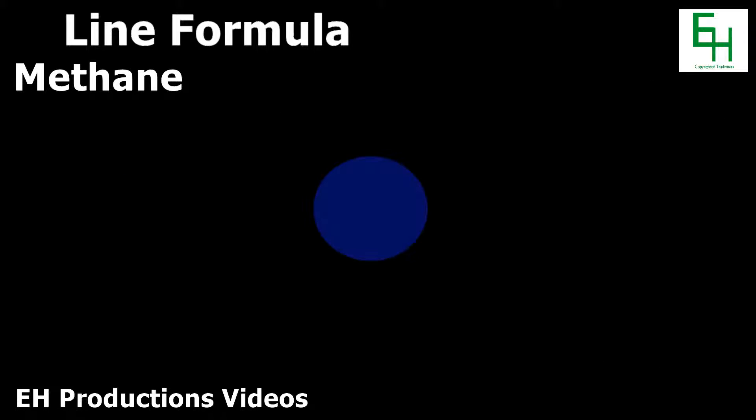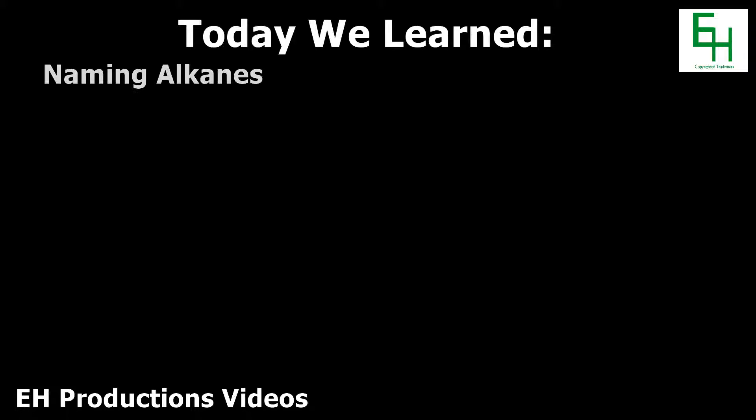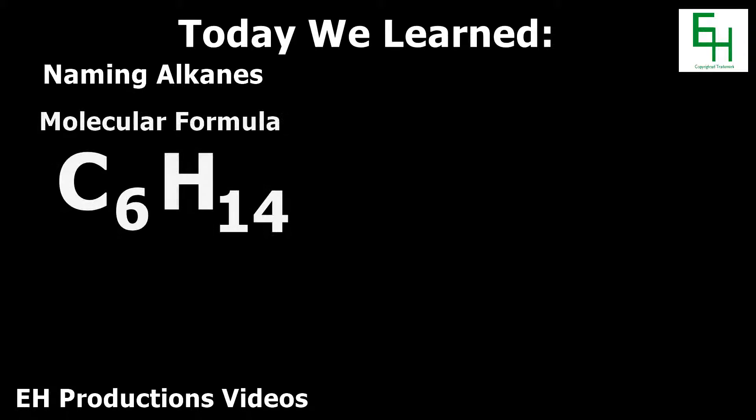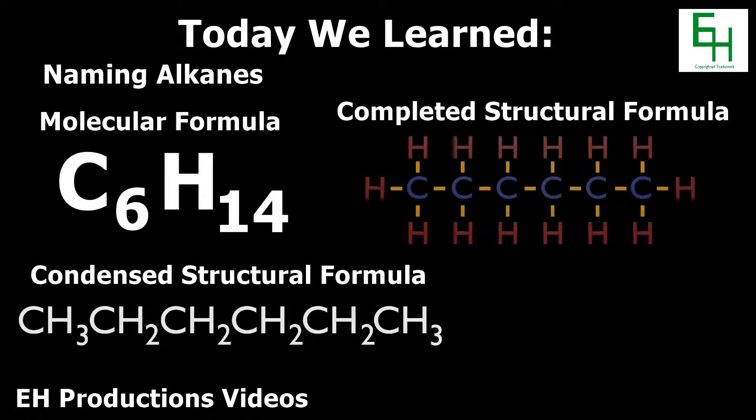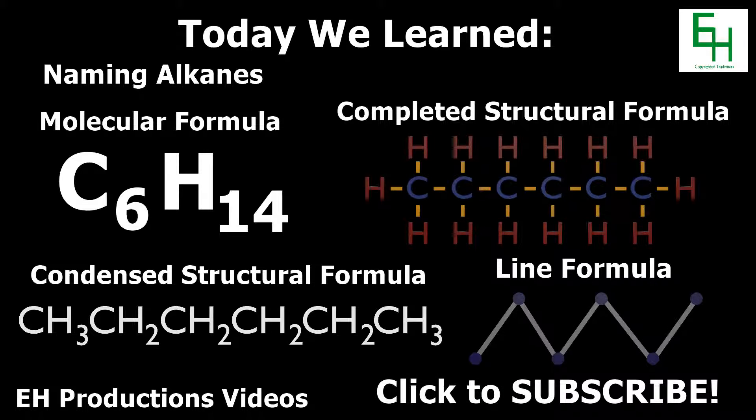If you draw methane using the line formula, it will only be a single dot, because there is only one carbon atom and there are no bonds between the carbons. Anyways, that's how you name alkanes and express them in molecular formula, completed structural formula, condensed structural formula, and line formula. Thanks for watching, and I hope you learned something new today!